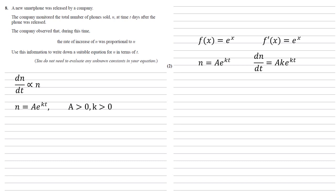So dn by dt is just a multiple of n, hence it's proportional. So there's our correct answer.